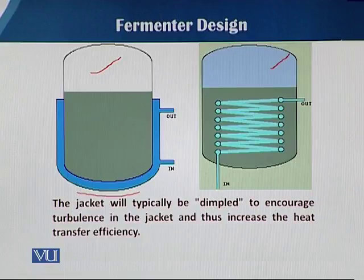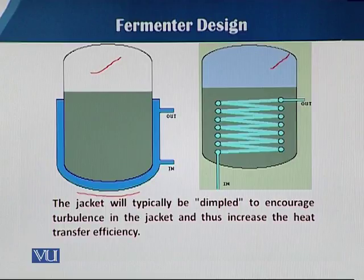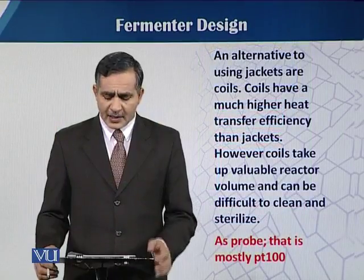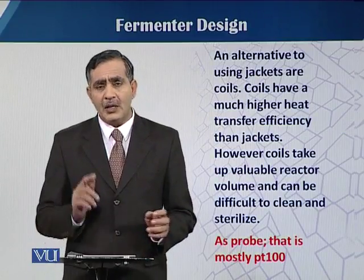In both cases, temperature control uses chilled or hot liquid, which can be water or another liquid. In some cases, the jacket uses dry heat — a direct electric heater used as a blanket — which is mostly used in lab-scale fermenters. As an alternative to jackets, there are also cooling coils.